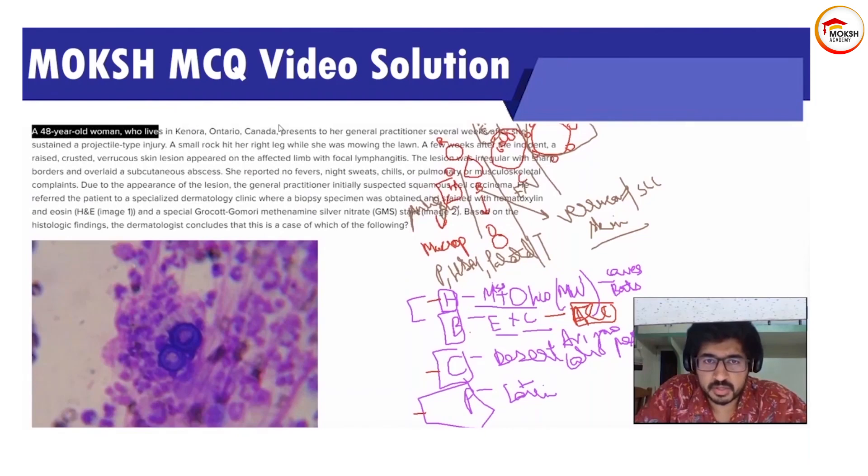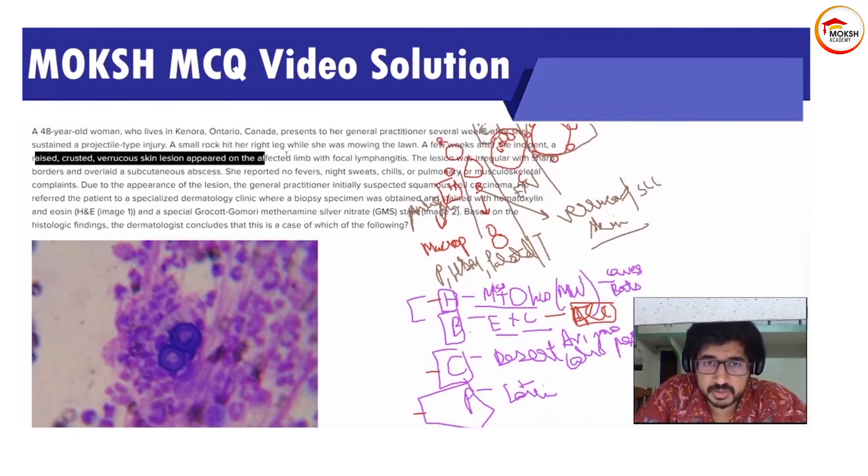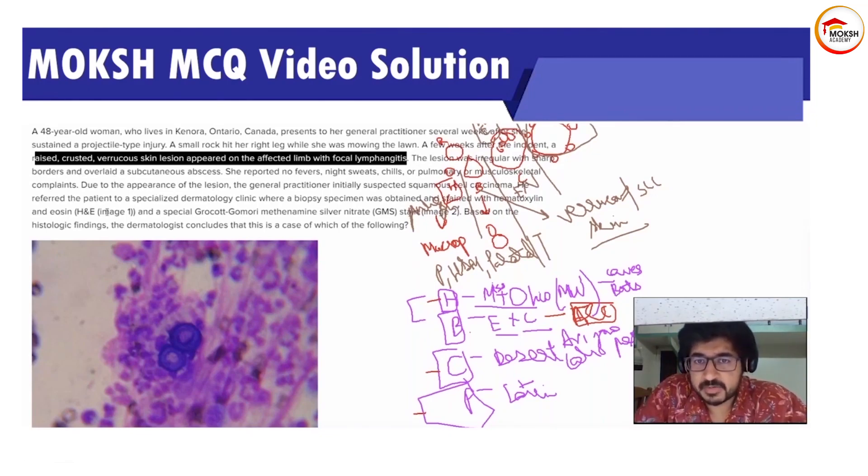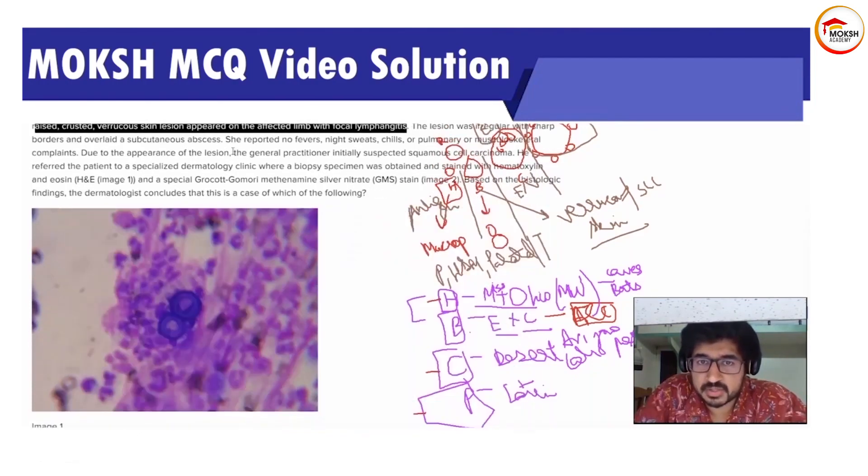Now we'll talk about the features. It is in Ontario, Canada. A small rock hit her and it formed a raised crusted varicose lesion. See, like I mentioned over here, raised crusted varicose skin lesion with focal lymphangitis. This is very, very specific for your blastomycosis along with the image and skin description.